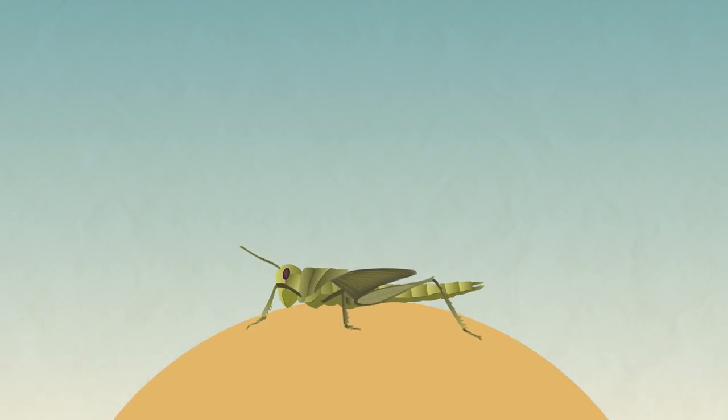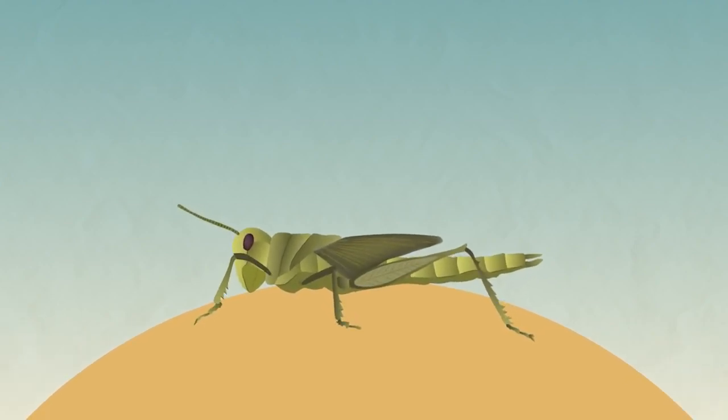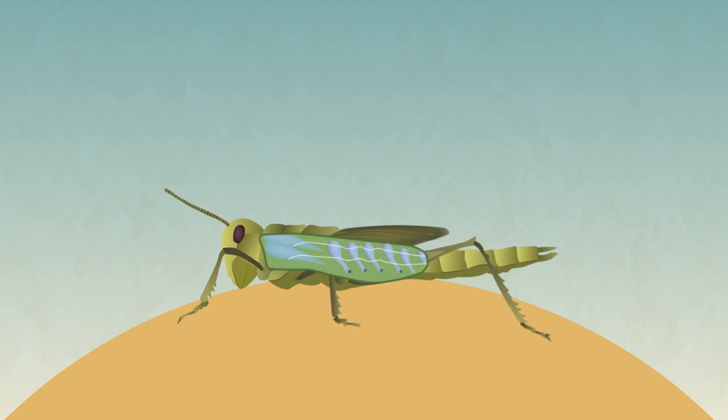What about this locust? It is an insect and a lot of insects use a system of tubes called trachea for exchanging gases.